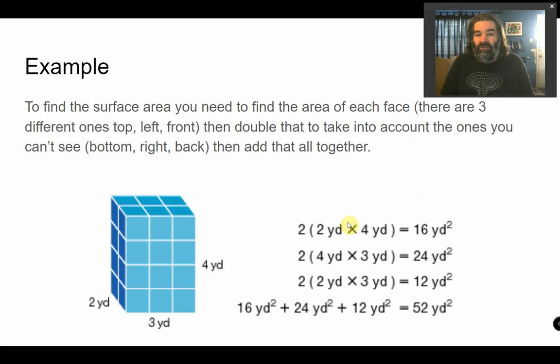It's actually easier to find with cubes. You need to find the area of each face, and then double each face, because each face is going to have another one that's the same. The top is going to be the same as the bottom. The front is going to be the same as the back. The right is going to be the same as the left.